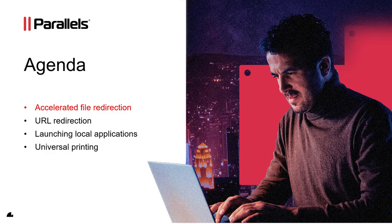The first feature is accelerated file redirection. Allowing users to access their local data from within published desktops and published applications is a very common scenario. The native RDP protocol, however, is not very efficient for file and folder enumeration when using Drive Redirection. This often leads to slow and sluggish user experience, especially when trying to enumerate a folder with a large number of files. Parallels RAS fixes this slowness with the Drive Redirection Cache feature.